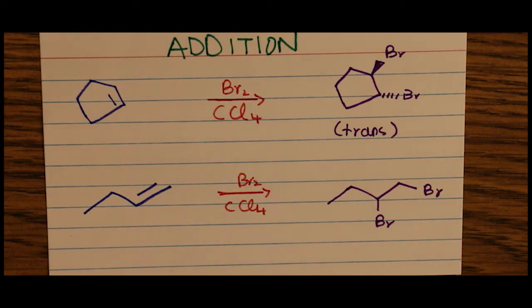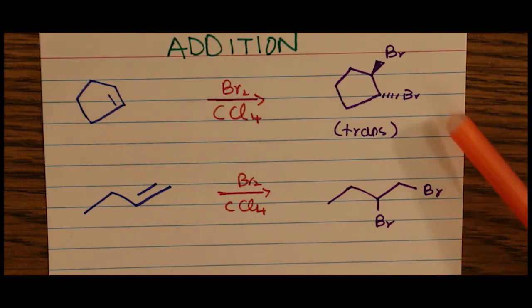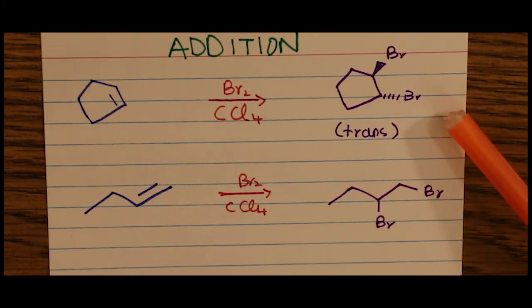Notice in an aliphatic chain, the bromine adds across the double bond, but this time it is not the trans configuration.